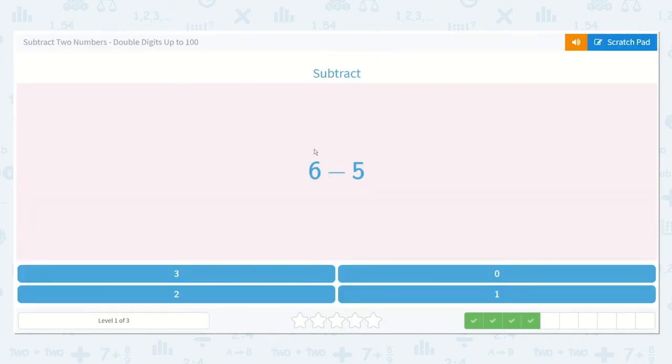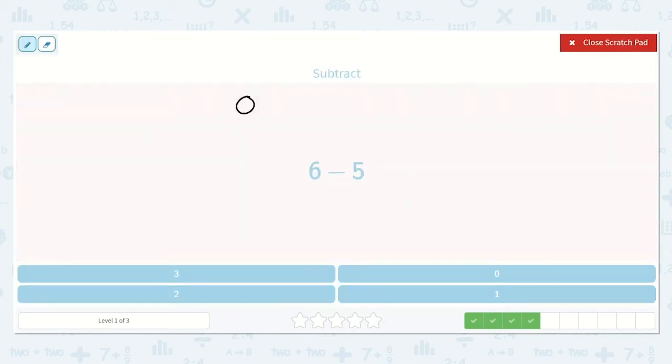The next one shows 6 minus 5. Alright, so we can draw 6: 1, 2, 3, 4, 5, 6. And we can cross off 5 of them because we are subtracting or taking away 5: 1, 2, 3, 4, 5. There is just 1 left. Alright, here is the 1.